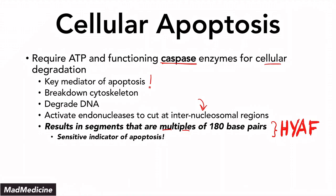This is high yield because it can be given to you in a question stem. For example, they could say that PCR or gel electrophoresis was done, and researchers found multiples of 180 base pair DNA fragments — what is the mechanism that is happening? That mechanism is apoptosis. They're going to ask you what pathway mechanism is also happening, so you need to know a little bit deeper than just apoptosis and 180 base pairs, which we'll discuss in upcoming lectures.